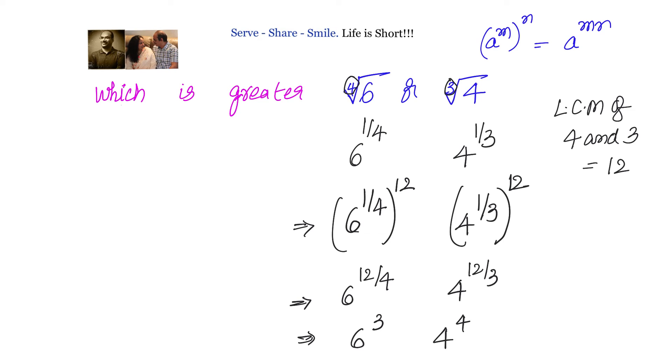Now this we can easily do. Whatever they have given us, whichever is greater, now we are able to transform that into comparable values. When we do that, the left side will become six cube and right side will become four to the power of four. Now we can compare this. Six cube is 216 and four to the power of four is 256.